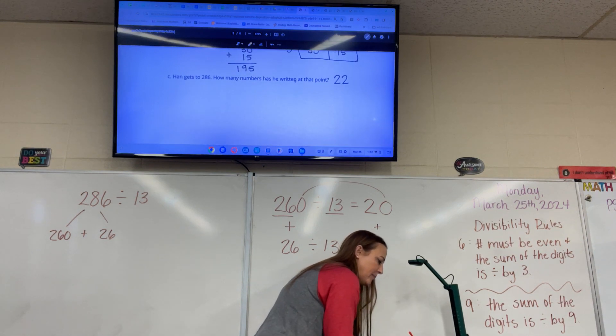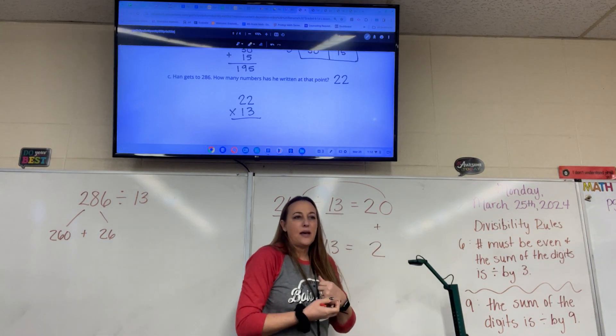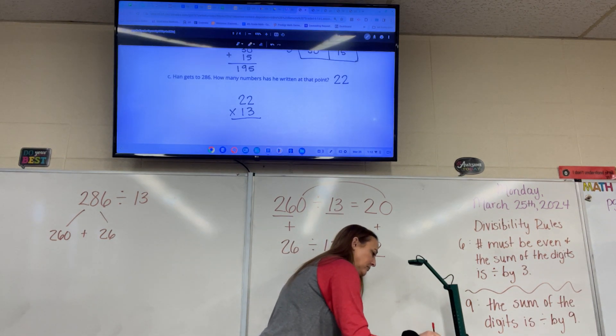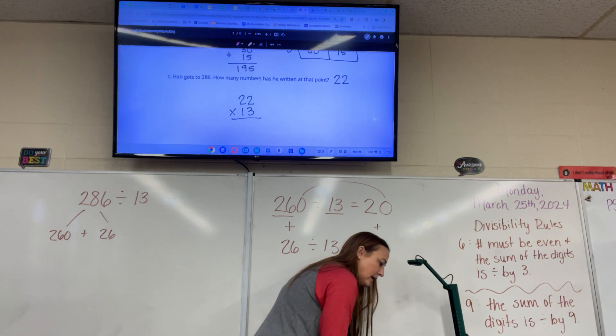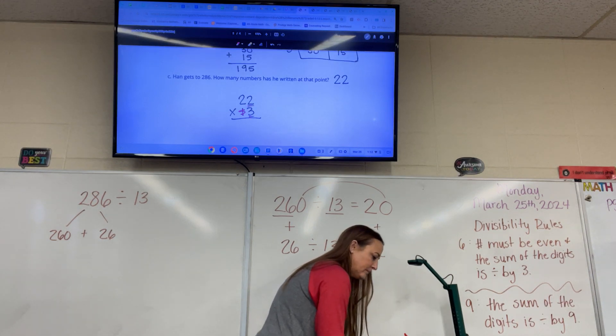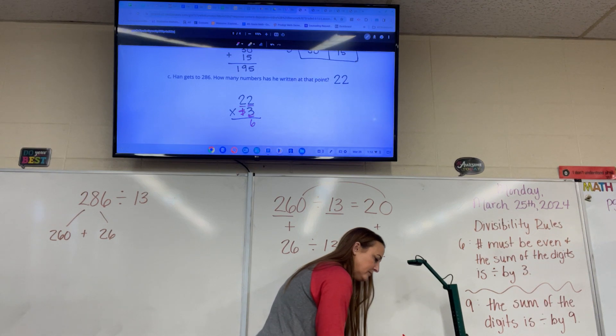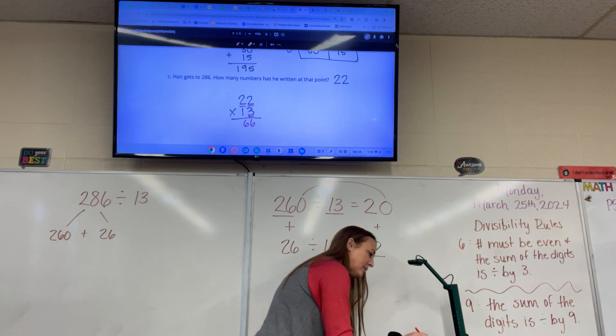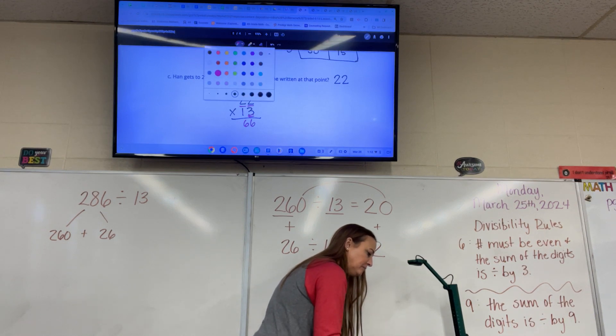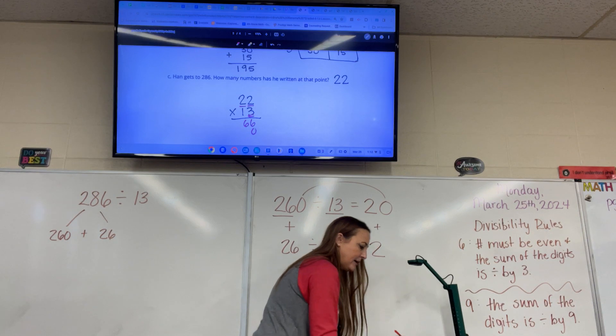We're going to double check by multiplying 22 times 13. And we're going to use the standard algorithm. Yay! Okay, so here we go. We're going to start by pretending the 1 isn't there. And going 3 times 2? 6. And 3 times 2? 6. 6. Okay? And now, the 1 comes back. But the 1's really a 10. And 10's always have a 0 behind them. So I'm going to put a 0 in the 1's place.